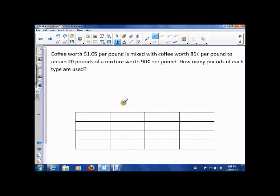So, in this case, we have coffee that's worth $1.05 per pound. And, you're mixing it with coffee that's worth $0.85 per pound. And, you're going to obtain 20 pounds of a mixture worth $0.90 a pound. So, let's start filling in some of these problems. This is coffee that's at $1.05 per pound. This is coffee that's at $0.85 a pound. And, this is coffee that's at $0.90 a pound.